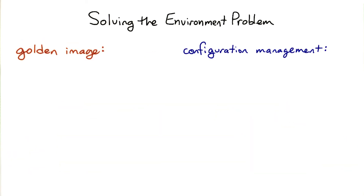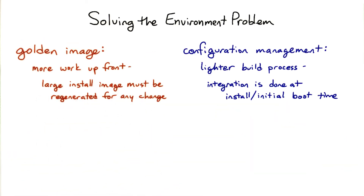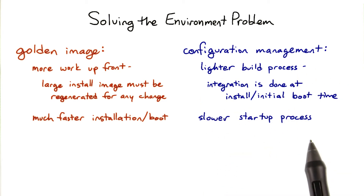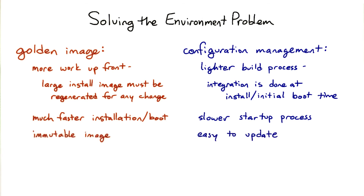The difference is that a golden image system requires more work up front and has to be regenerated whenever there are any changes. But once it's done, it's very fast to boot up a new server or VM with it. With the configuration management system on the other hand, booting up will be slower because every machine needs to install the same software on the first boot. However, if there is a configuration change, it's easy and fast to get these changes out to the machines without the need to regenerate the image.